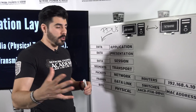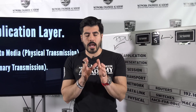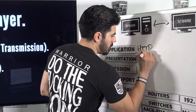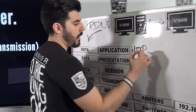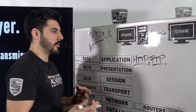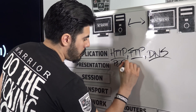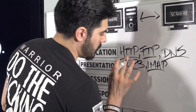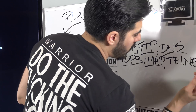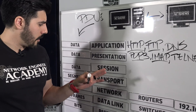Let me add more value. The application layer has many protocols. A few key ones: HTTP for web browsing, FTP for file transfer, DNS for domain name resolution, POP3 and IMAP for email, and Telnet for remote connections.